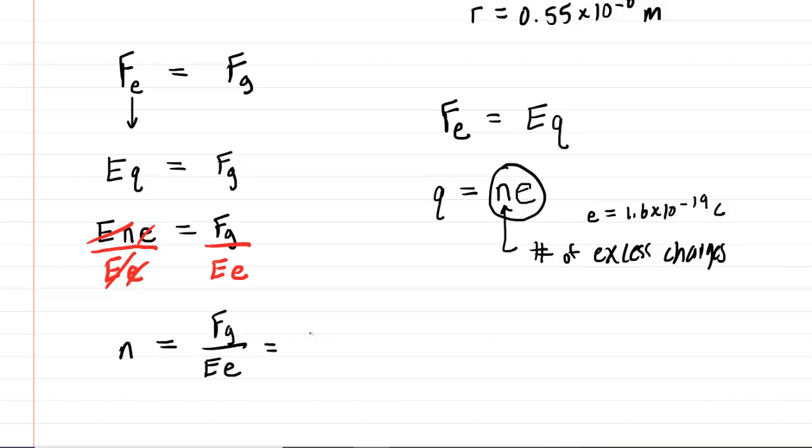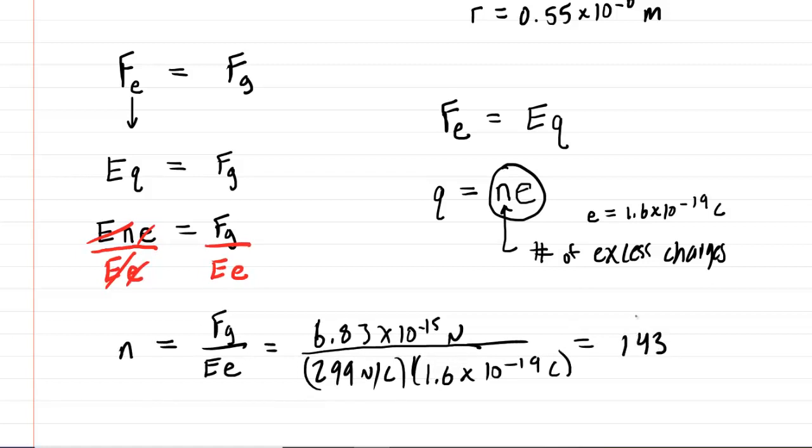We have the gravitational force that we found in part A, which is about 6.83 times 10 to the minus 15 newtons, divided by the electric field magnitude, which was 299 newtons per coulomb, and then times the standard value of the electric charge, 1.6 times 10 to the negative 19th coulombs. When you crunch that down on your calculator, you're going to get approximately 143. So that would be how many excess electrons are present on the water droplet.